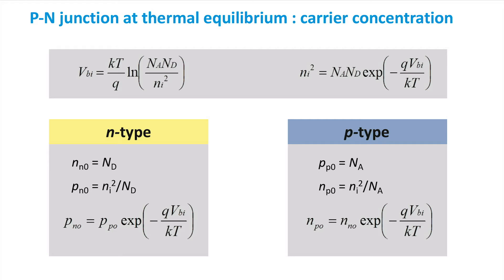The concentration of majority carriers equals the concentration of dopant atoms. Using the rearranged equation for built-in voltage to express the square of the intrinsic concentration, we get equations relating the hole concentration in the N-type region to the hole concentration in the P-type region, and the electron concentration in the P-type region to the electron concentration in the N-type region. These equations hold under thermal equilibrium.